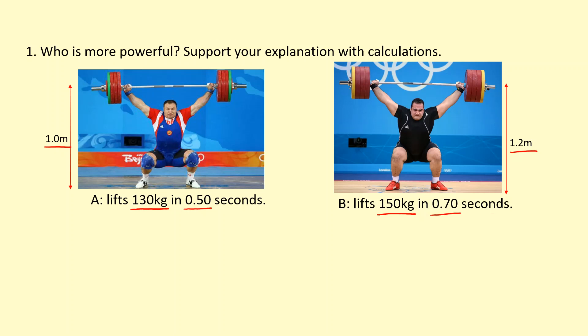In terms of energy transferred, we can figure that out because the work they're doing is against the force of gravity, so the masses are gaining gravitational potential energy. The gravitational potential energy on the left is 1,275 joules, on the right is 1,766 joules, so the guy on the right is transferring more energy.